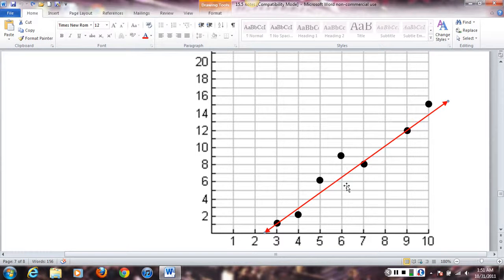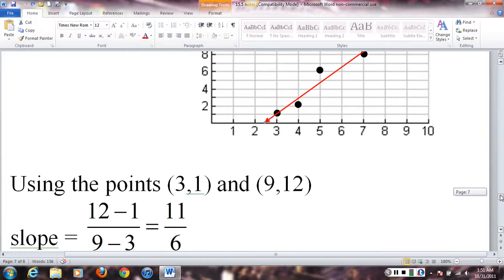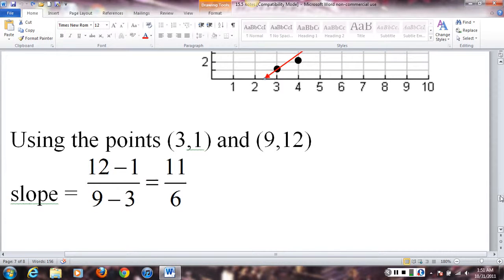But again, here's the ones I chose. So, I chose the points (3, 1) and (9, 12). So, the first thing I do is find the slope, which comes out to be 11/6.